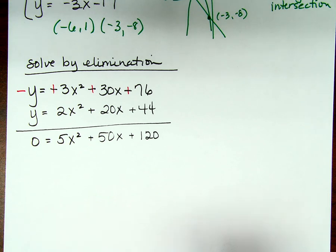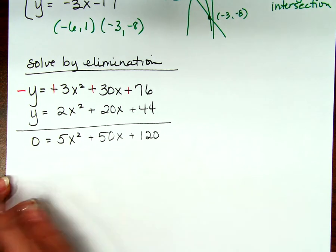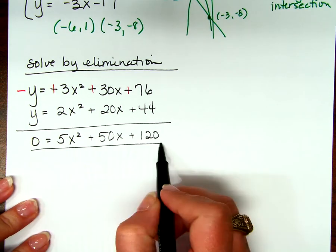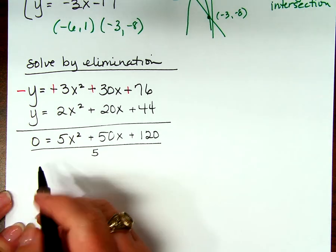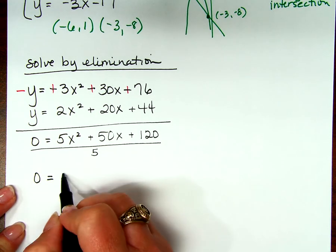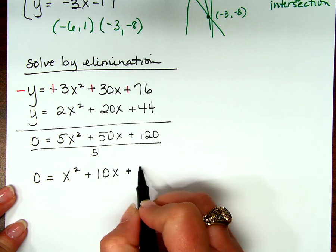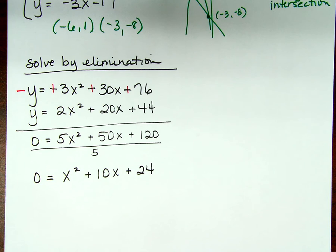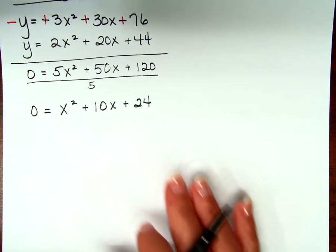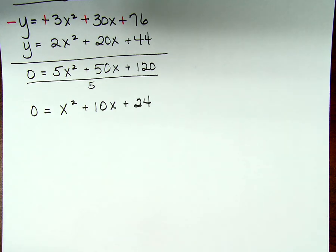Because no matter which way you choose to solve after that, by taking out a greatest common factor you've made the problem easier. What's common here — what should I factor out of everything? I'm going to divide a 5 out of every single term. If I divide 5 out, I get 0 equals x squared plus 10x plus 24. Now I have to decide how I want to solve this. Since my leading coefficient is 1, I could complete the square.